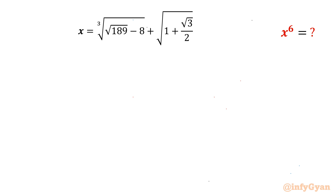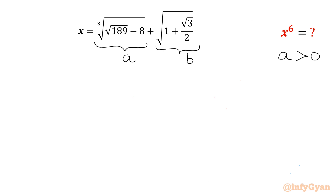Let us get started by considering the cube root part equal to a and the square root part equal to b. Since square root of 189 is greater than square root of 64, a will always be positive. Let us calculate both values separately.